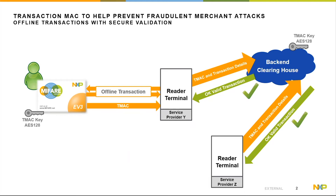Additionally, a so-called TMac counter — the Transaction MAC counter — is increased by one for every executed transaction. The reader can store and collect all transaction-relevant details, as well as the Transaction MAC value and counter. Once the reader goes online and connects to the back-end server or clearinghouse, it can send all these details in a batch to the back-end.